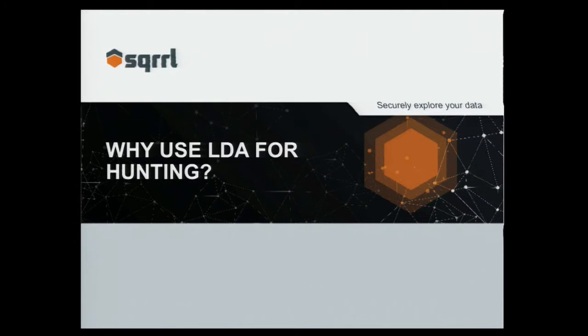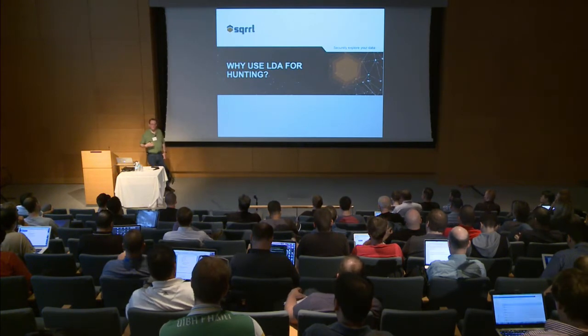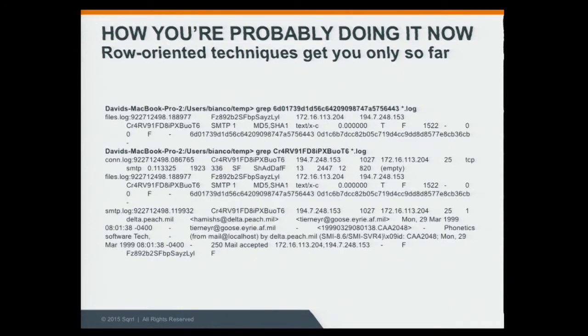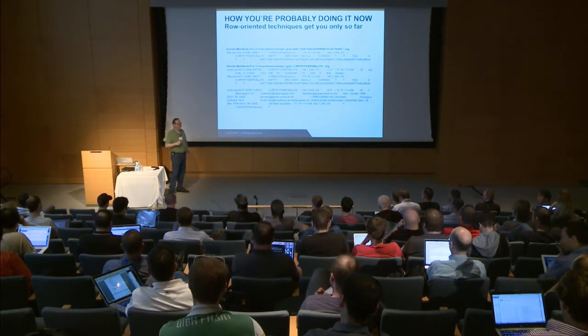So that's what linked data is. Now let me try to get you excited about using linked data for hunting, alert analysis, or any investigative tasks that analysts do. This is probably how you might be using Bro data today — using grep and making good use of connection IDs to get all the things that are related. You might also be doing something more complex with ELSA or Splunk. Anyone just using grep on their Bro logs? Still a fair amount. Splunk or ELSA? Who's doing something else? Come talk to me after.